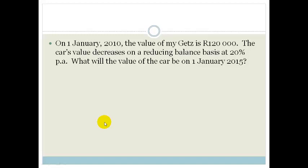So the first thing I'm going to do is write down the formula. So A is equal to P. Because it's reducing balance, we know it's compound interest. But it's depreciation, so it's 1 minus I all to the power of N. We know that P is 120,000. That was the value of the car on the 1st of January 2010. The interest, I, is 20, but we're getting it into a decimal. So we divide by 100, which gives us 0.2.